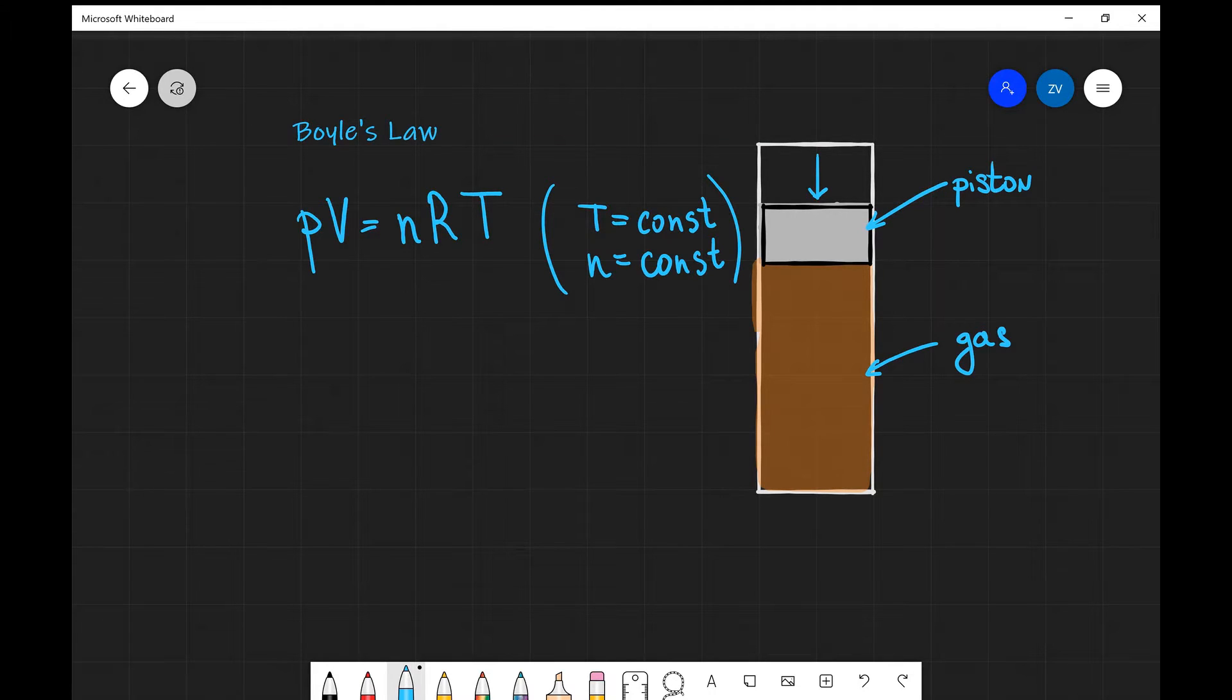What are the consequences of that? PV will then be equal to n, which is a constant. R is just 8.31, the universal gas constant. And T is also a constant. So that whole right-hand side is equal to a constant.